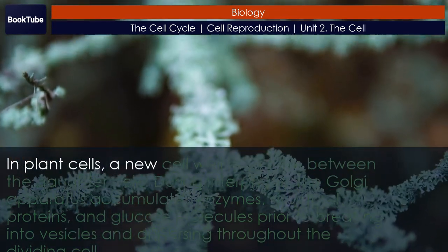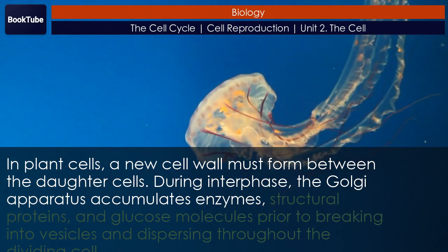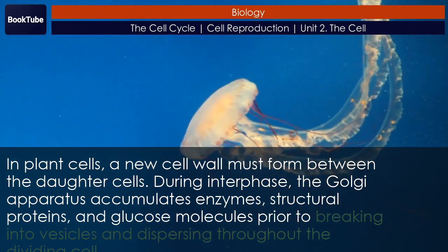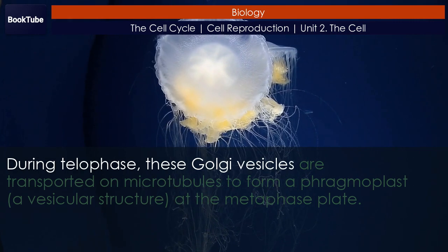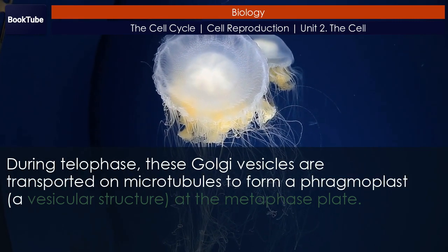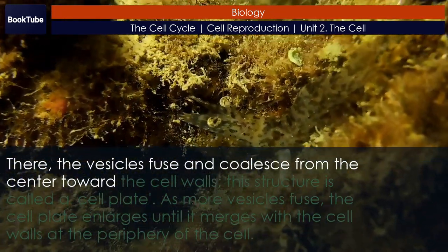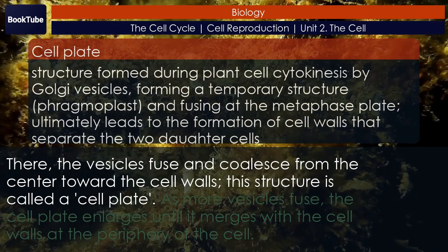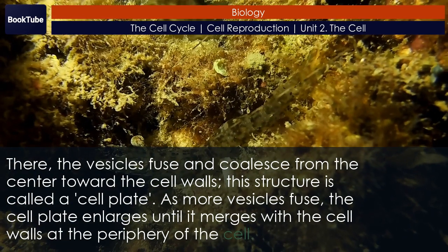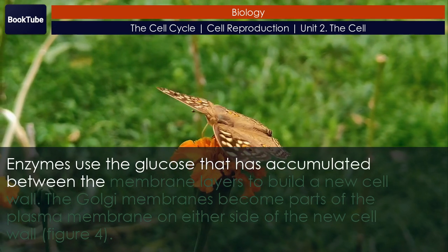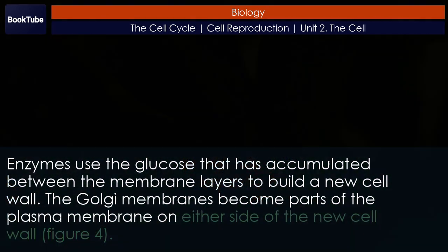In plant cells, a new cell wall must form between the daughter cells. During interphase, the Golgi apparatus accumulates enzymes, structural proteins, and glucose molecules prior to breaking into vesicles and dispersing throughout the dividing cell. During telophase, these Golgi vesicles are transported on microtubules to form a phragmoplast, a vesicular structure, at the metaphase plate, where the vesicles fuse and coalesce from the center toward the cell walls. This structure is called a cell plate. As more vesicles fuse, the cell plate enlarges until it merges with the cell walls at the periphery of the cell. Enzymes use the accumulated glucose to build a new cell wall, and the Golgi membranes become parts of the plasma membrane on either side of the new cell wall.